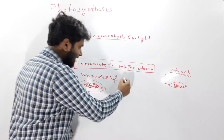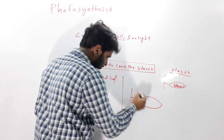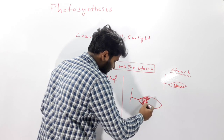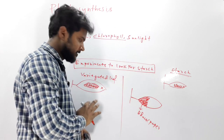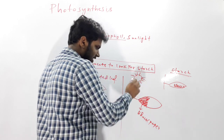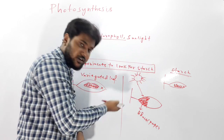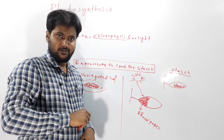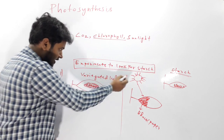In another experiment, we took one leaf and covered a portion of it with black paper. The black paper prevents sunlight from reaching the chlorophyll inside it, creating a barrier between the sunlight and that portion of the leaf. The other part remained exposed to sunlight.